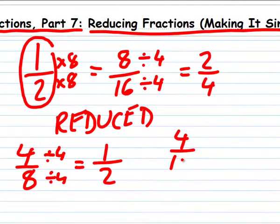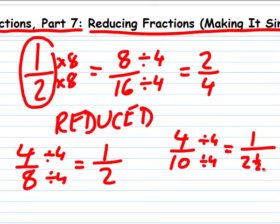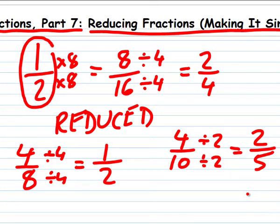How about 4 tenths? Well, 4 divided by 4 is 1, but 10 divided by 4 is 2 and a half. That's not going to work. But 4 and 10 are both even, so let's try dividing by 2 instead. 4 divided by 2 is 2, and 10 divided by 2 is 5. 4 tenths equals 2 fifths. 2 and 5 are both prime numbers, so we can't divide them by anything else. 4 tenths reduces to 2 fifths.